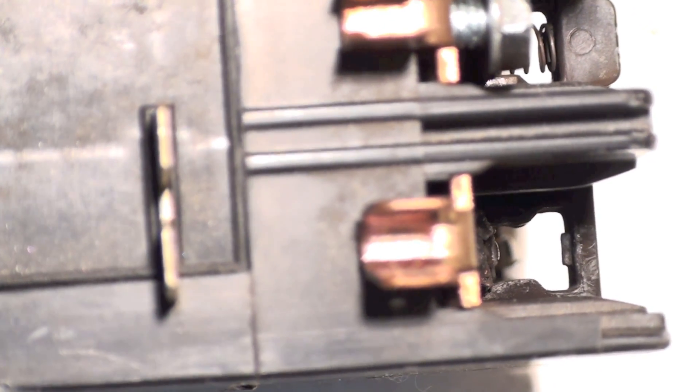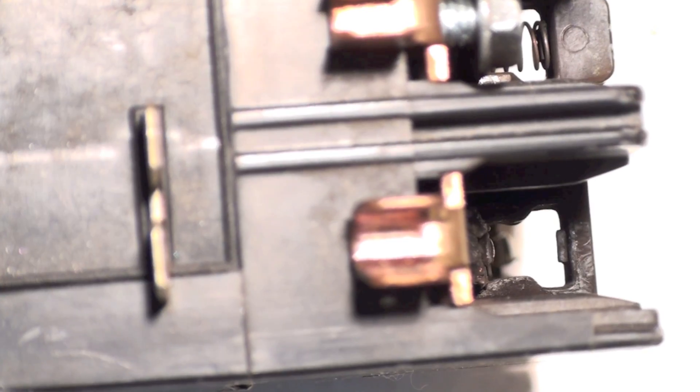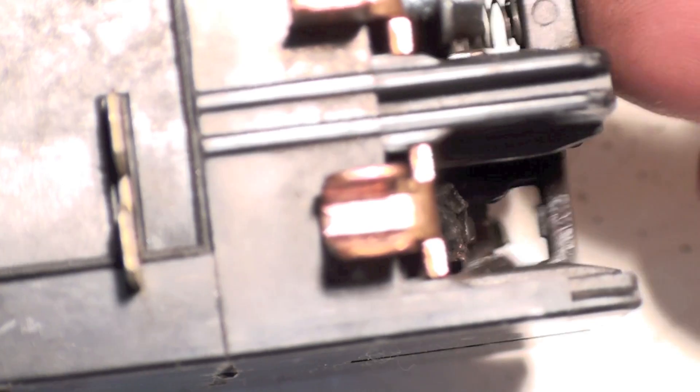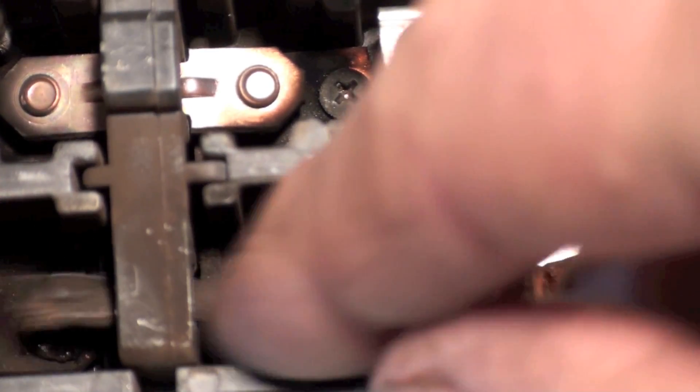Now whether the spring fell out after it started burning up or whether it fell out before and caused the burn up, it's hard to say. But either way, when this armature came down it wasn't holding this one down like it should, and so you ended up with this sort of cobbled up looking mess here.